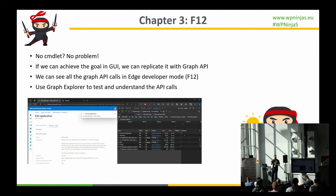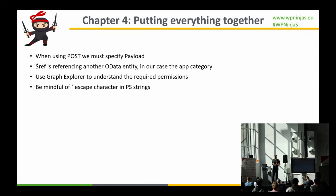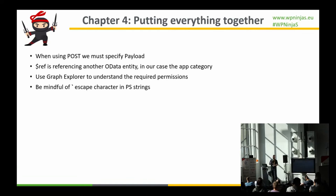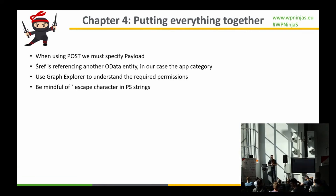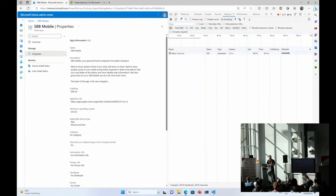I used Graph Explorer to actually test the calls. Just before the demo: I learned that when editing a category, it's not a GET method — it's a POST to the dollar ref endpoint. When using Graph API, be mindful of required permissions. Graph Explorer is a great tool not only to understand and troubleshoot API calls, but also to see which permissions you're missing. And be mindful of the special back-tick character in PowerShell strings.